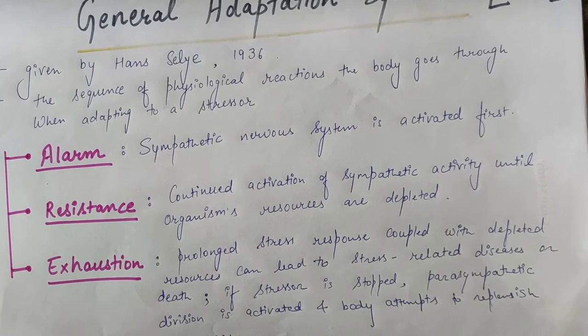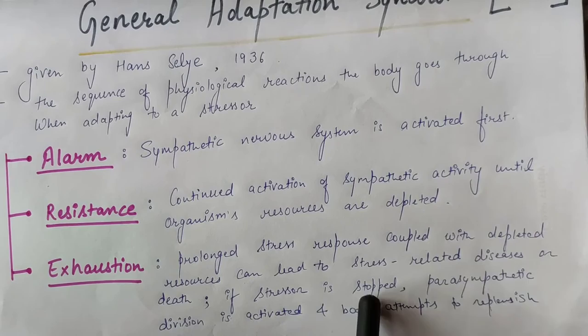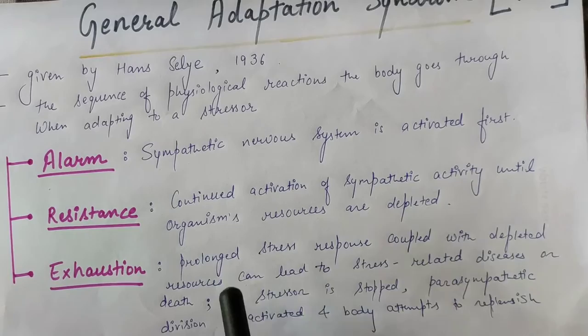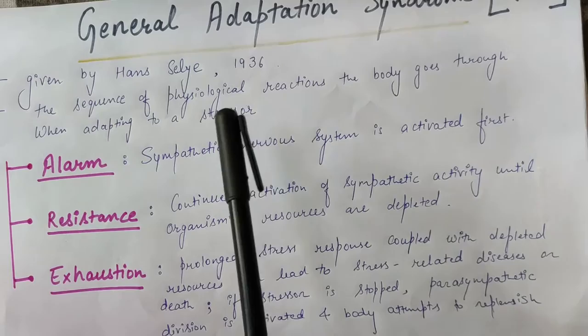The parasympathetic division is for rest and digest, which is our body's energy store. If we stop the stressor early, the parasympathetic system activates in the calm state. But if we only stop the stressor at the exhaustion stage, diseases, death, and psychological disorders can still start because of the prolonged stressful situation.